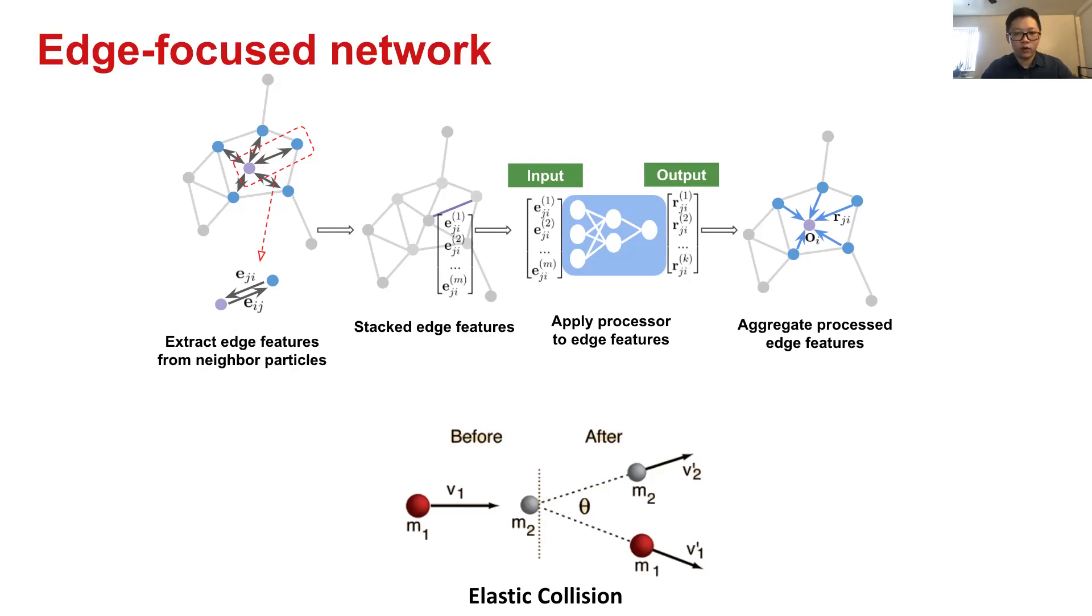And aggregate them, we got then we have the overall effect on the central node. The aggregation is that in collision calculation, we first calculate all the possible collision. Then we need to sum up this collision that happens on the target particle to see the overall effect on it. And here the aggregation is doing a similar process.